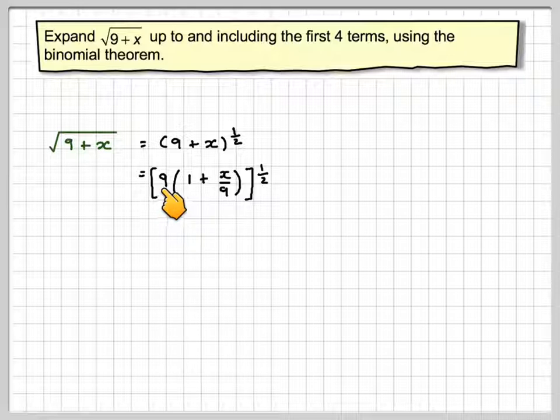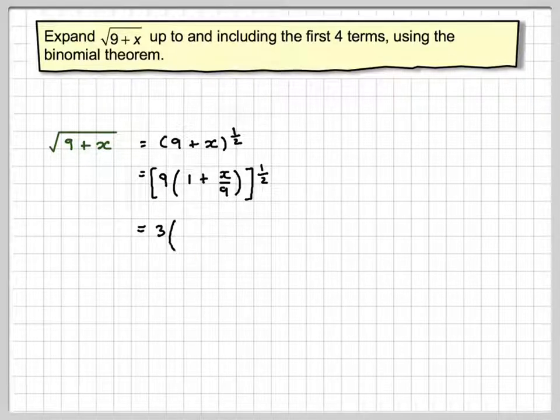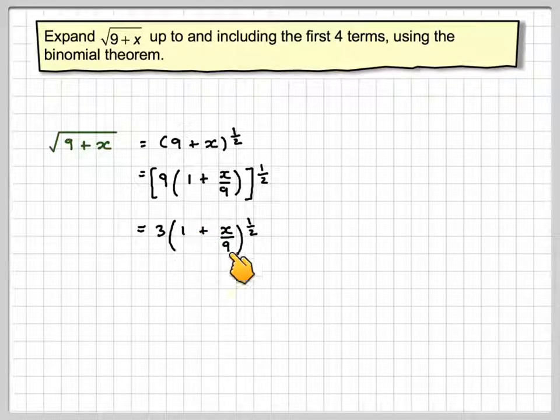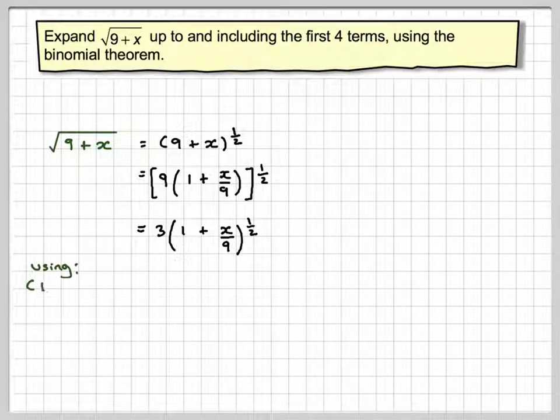Now this means take the square root of 9 which is 3, so this becomes 3 times 1 plus x over 9 to the power of a half. We will now expand this bit using what we normally do.